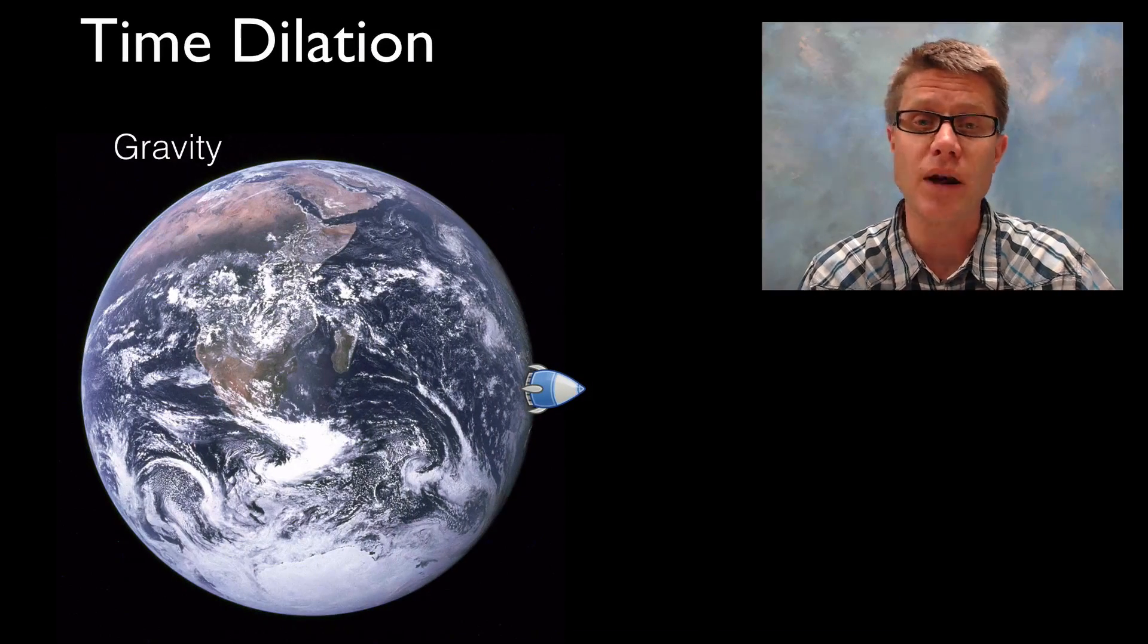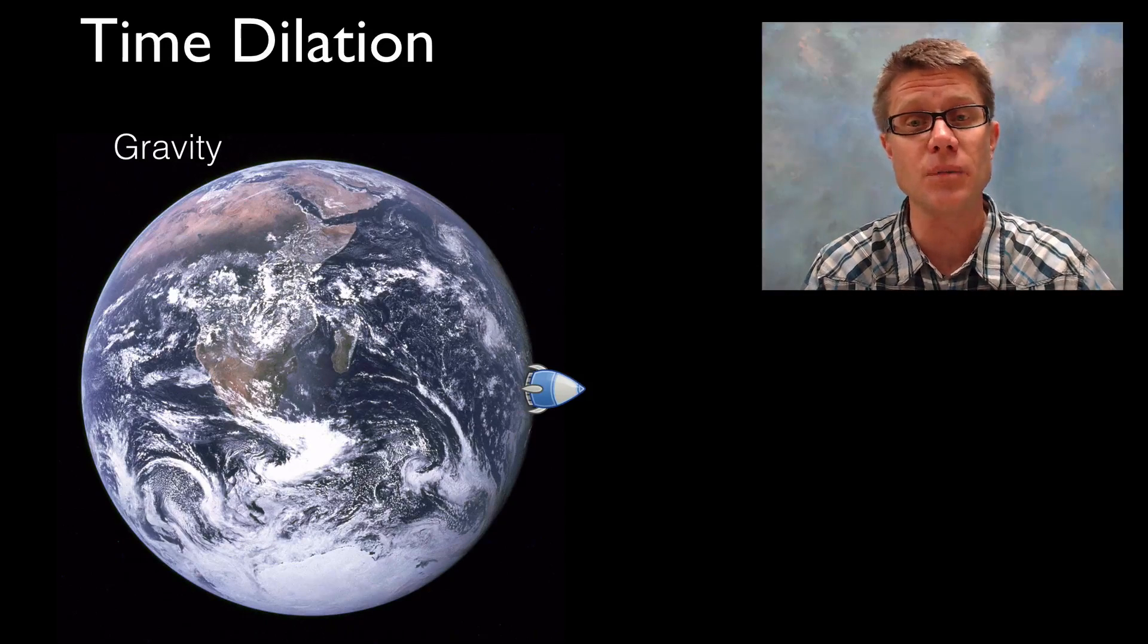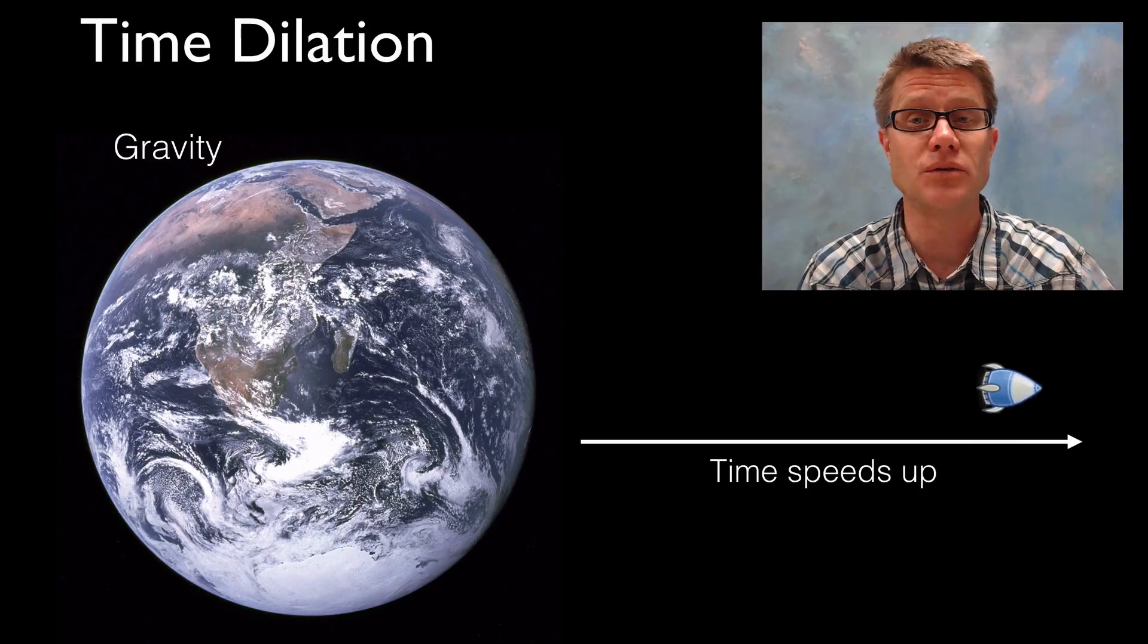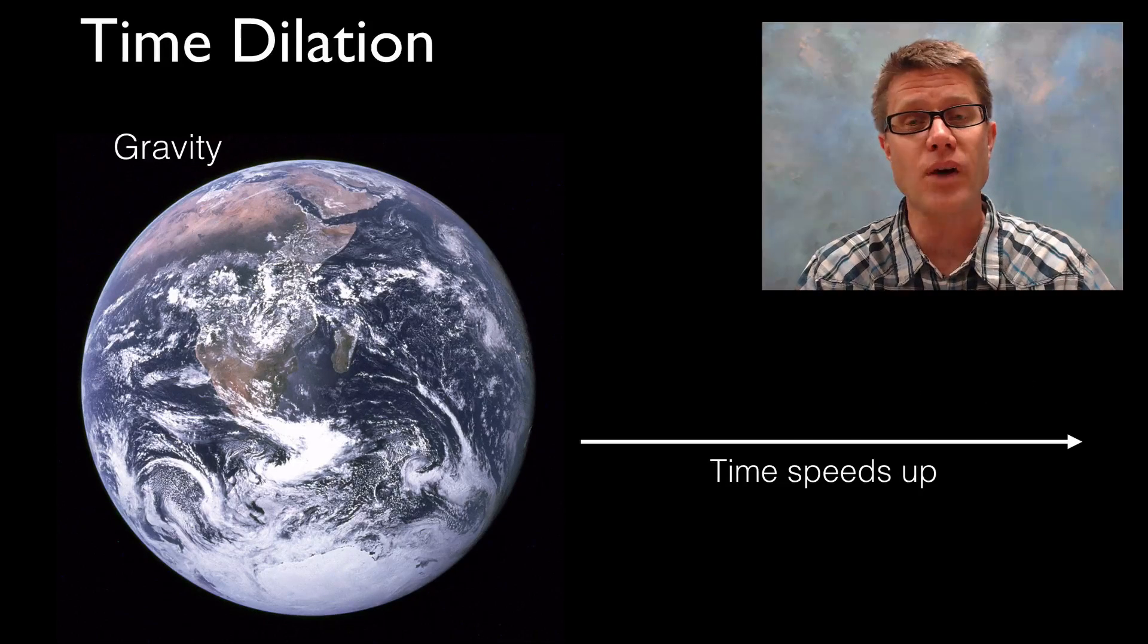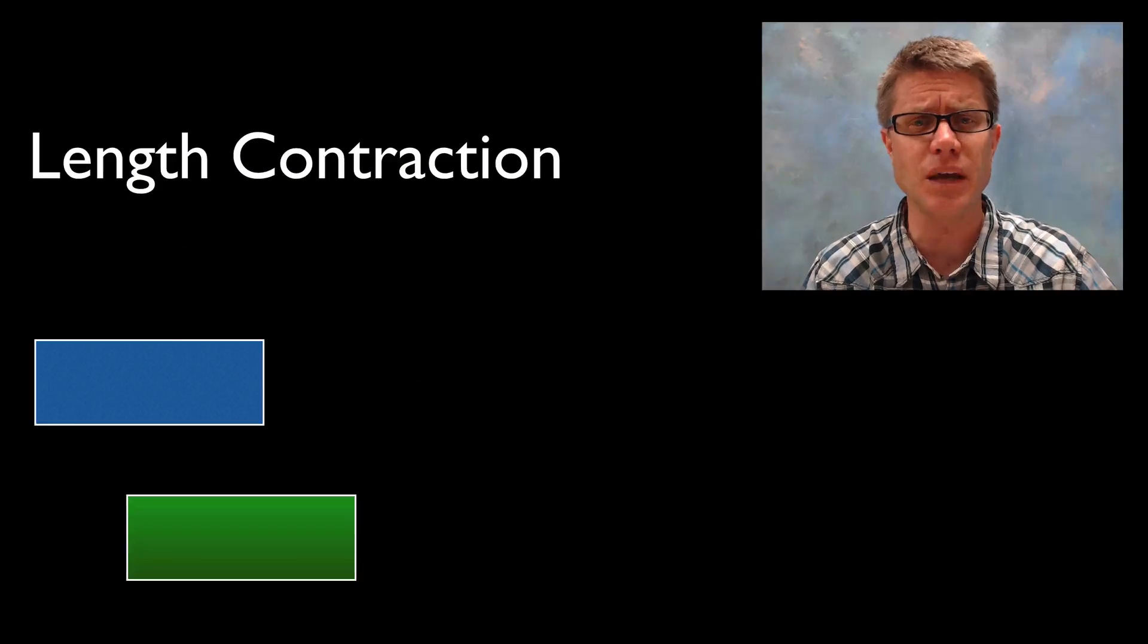We also see gravity affecting time. If you're on a rocket ship right close to the earth we have a high amount of gravity, but as it moves away time is actually going to speed up. Gravity can affect time, which just seems crazy, and it even can affect space.